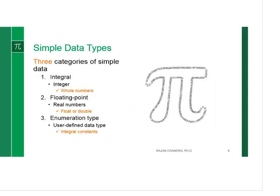There are three types. One is integral, which means integer, where we represent the whole number. The second group is floating point, which is a real number. And the third one is enumeration type, where we specify integral constant.